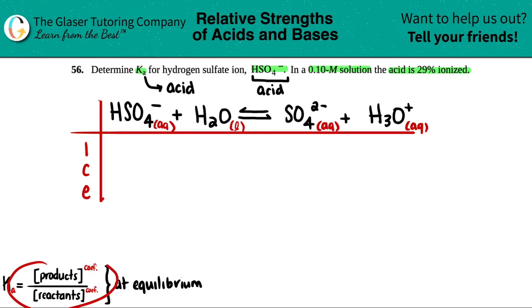Anytime you see charged ions, they're always aqueous. Water is the solvent, that's going to be a liquid. Remember, no solids or liquids in your Ka expression when we get down to it. That's why we could care less about this column.